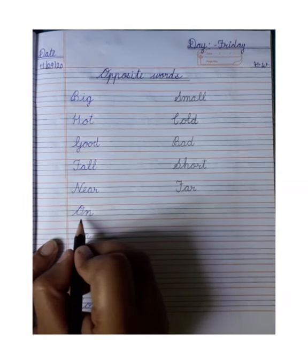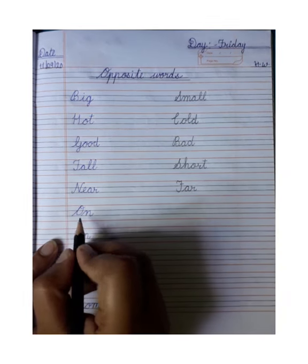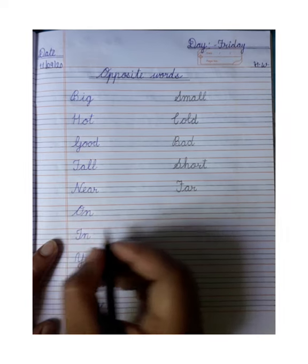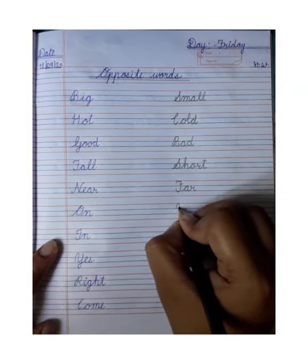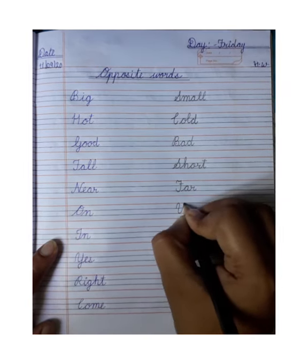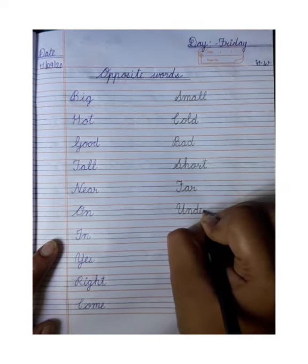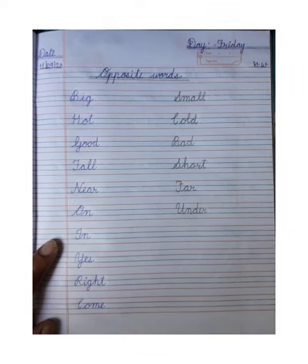Next, on — on yani par. Under yani niche. On ka opposite? Under. U-N-D-E-R, under.